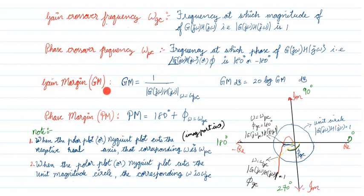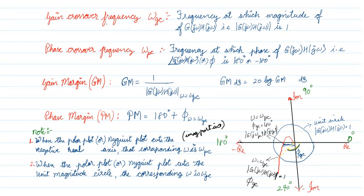Then, gain margin. Gain margin is 1 divided by the magnitude at the phase crossover frequency. To find the gain margin, first identify the phase crossover frequency, then find out the magnitude, then do 1 by magnitude, and you will get the gain margin. This gain margin can also be expressed in decibels: 20·log(gain margin), i.e., 20·log(1/|G(jω)H(jω)| at ω_pc).